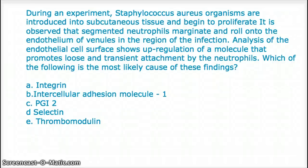This question says: During an experiment, Staph aureus organisms are introduced into subcutaneous tissue and begin to proliferate. It is observed that segmented neutrophils marginate and roll onto the endothelium of venules in the region of infection. Analysis of endothelial cells shows upregulation of a molecule that promotes loose and transient attachment by the neutrophils.